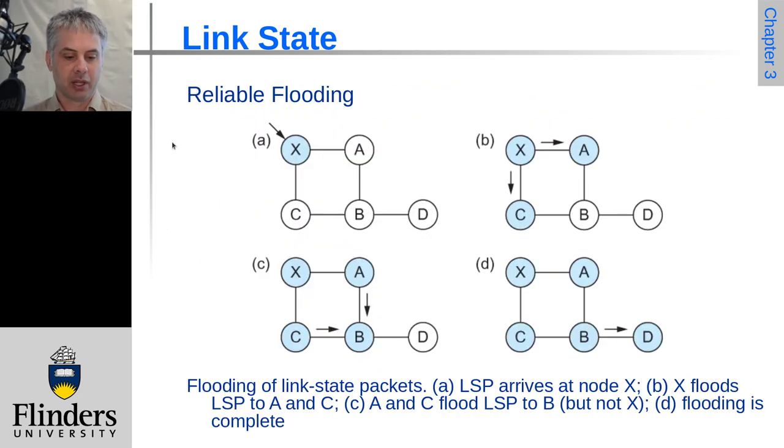So the reliable flooding algorithm is really quite simple. When a node receives an LSP, it sends it to every directly connected neighbor except for the one who sent it. So it won't send it to wherever it came in from. So if X receives it, it'll send it to A and C. A and C won't send it back to X because they received it from X. They will send it on to B. B's actually got it twice, that's fine, but B knows it got it from A and C, so B doesn't need to send it back to A and C. It only needs to send it on to D.